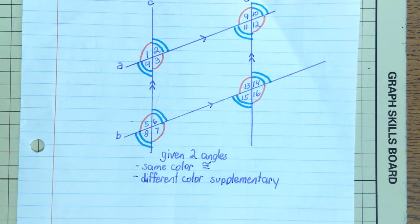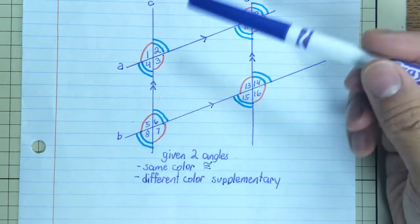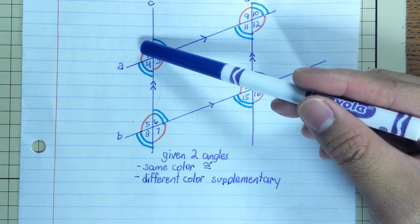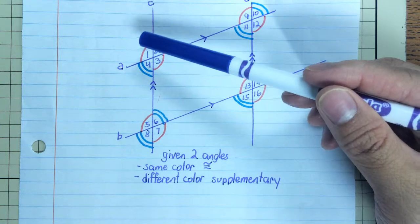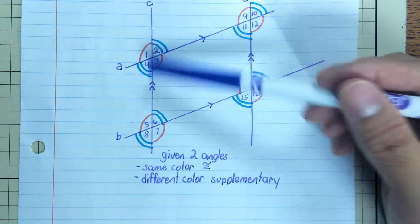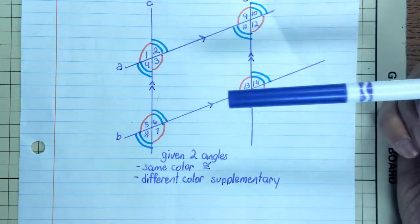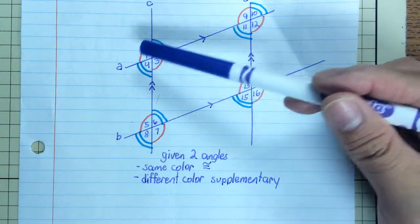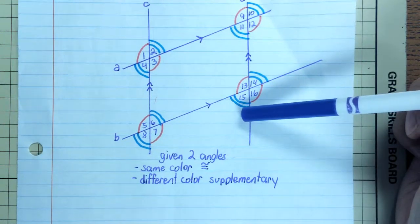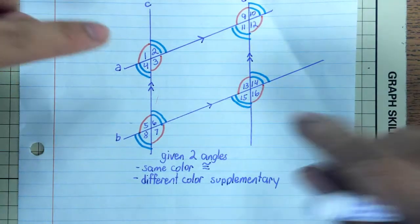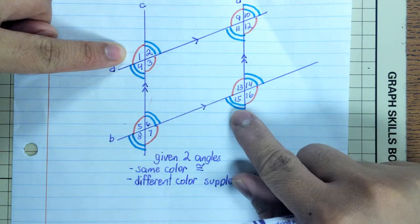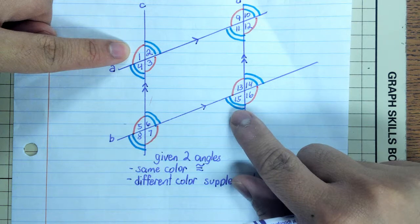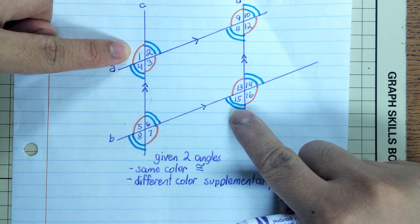The reason I am giving this shortcut is because, for example, we know angle one and angle eight are same side exterior angles which makes them supplementary. But if we see a question something like angle one with angle fifteen, they're no longer one of our special angle pairs. So this shortcut tells us to figure out that, oh, one is red, fifteen is blue, they're different colors so they must be supplementary.